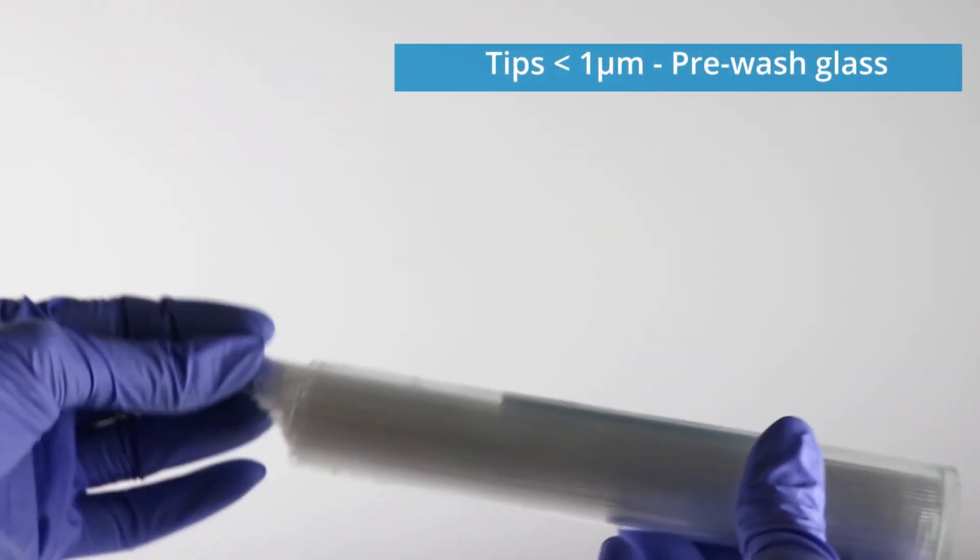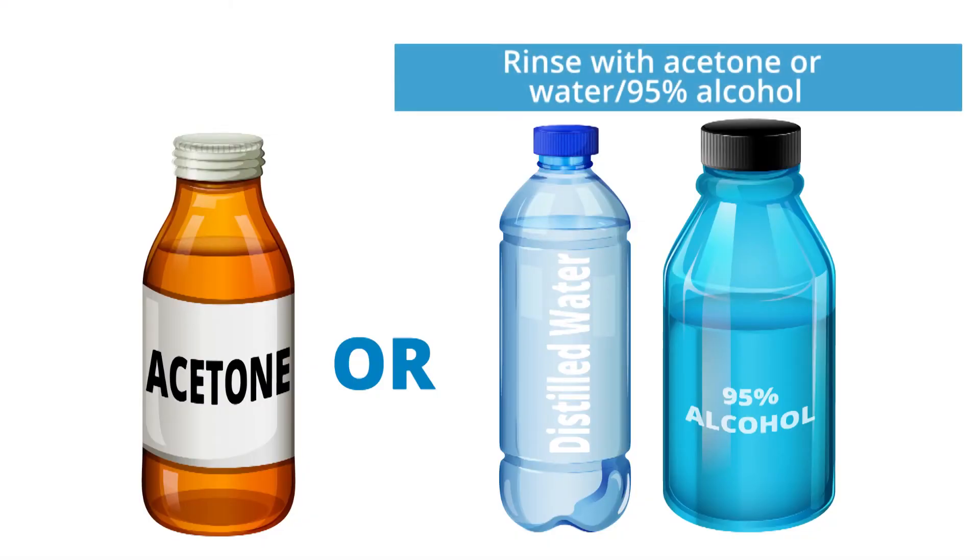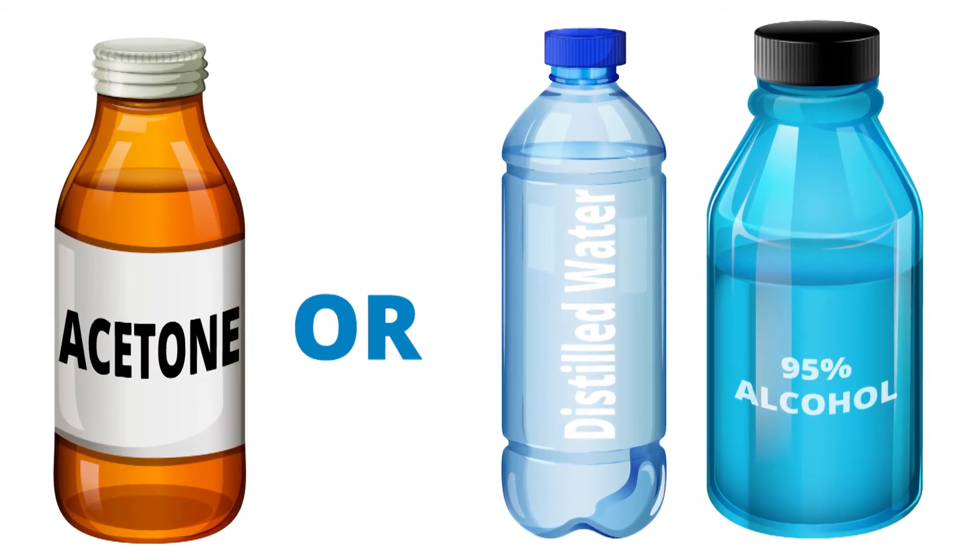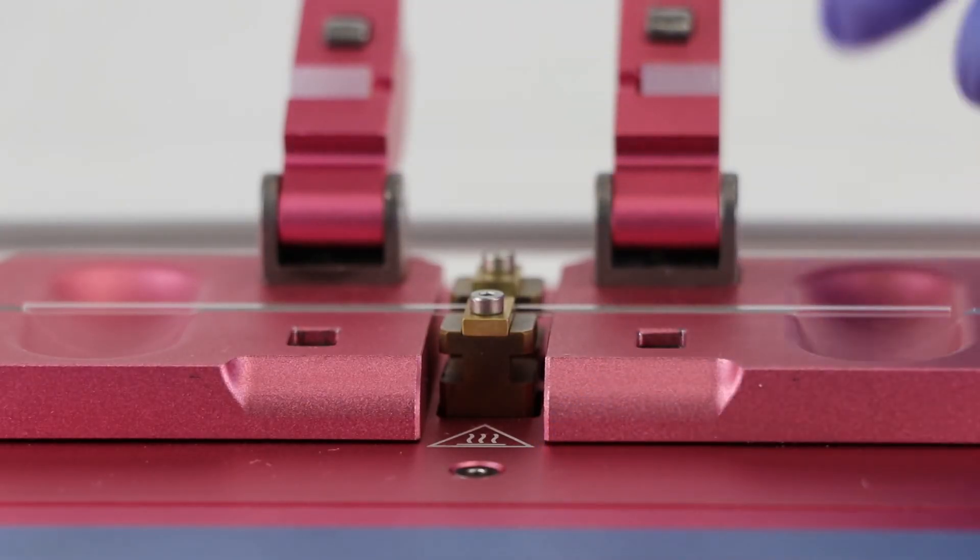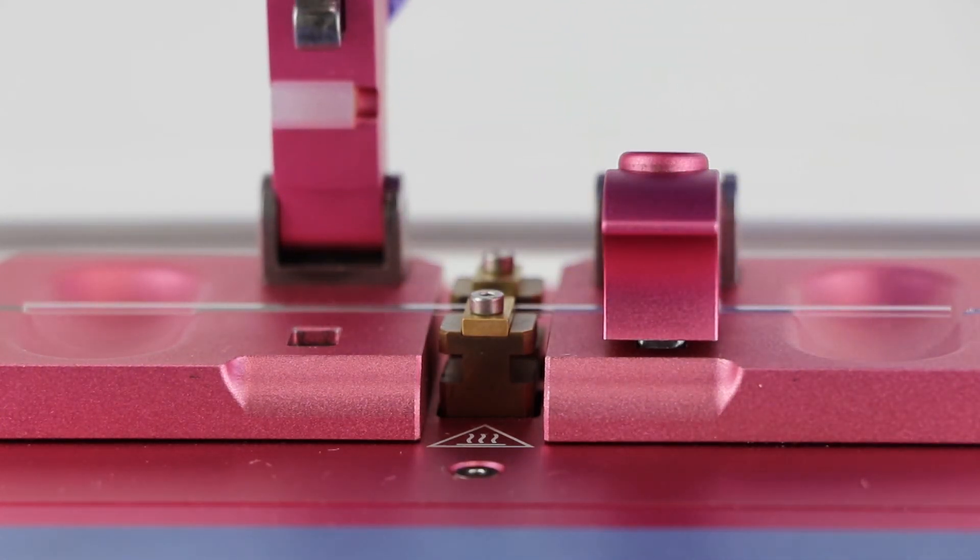When pulling glass tips finer than one micron, first wash the glass capillaries in filtered acetone or filtered distilled water with 95% alcohol. Then allow the fluids to evaporate in a clean and dust-free environment. This assures that the submicron tips are not immediately clogged with glass particles from the manufacturing of the capillaries.